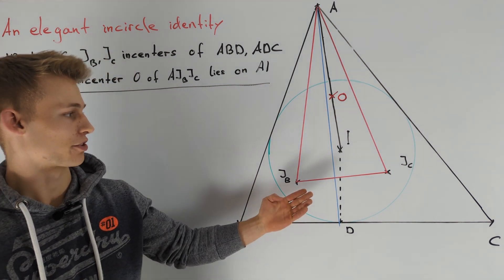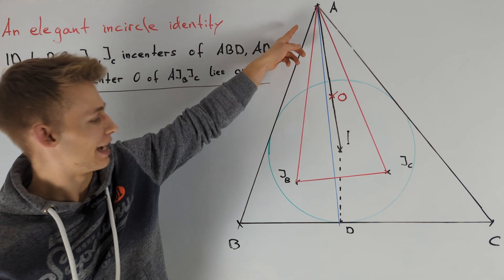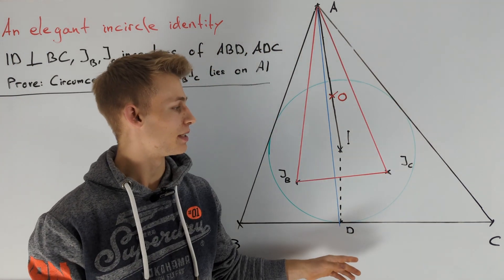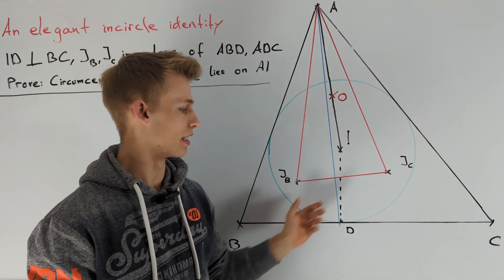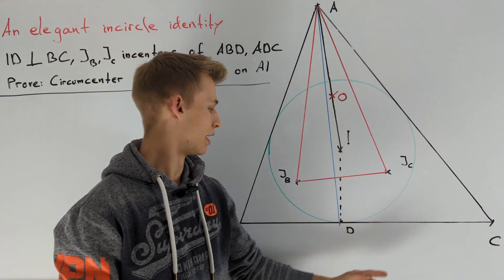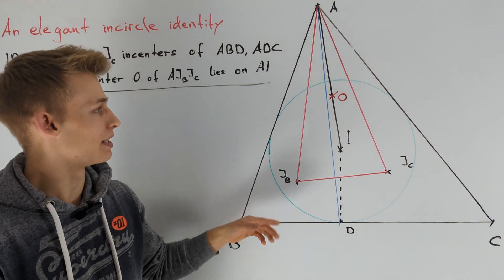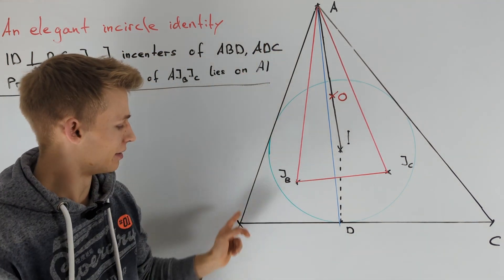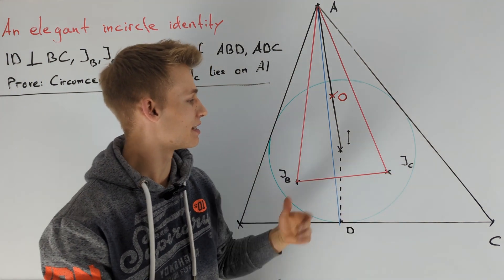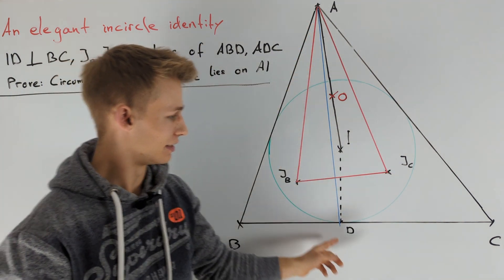First, let's look at the picture. We have a triangle ABC with in-center I. D is the touching point of the in-circle with line BC, so ID is perpendicular to BC. We define JB to be the in-center of triangle ABD, and JC to be the in-center of triangle ADC.